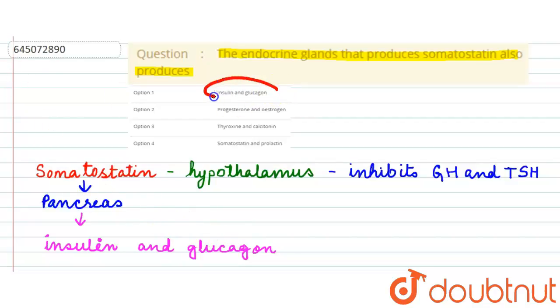So if we now look back to the options, we can see that option 1 is the correct option. Whereas if we discuss the other options, we will find the second option is progesterone and estrogen. Now both of these hormones are produced from ovaries, not the pancreas.